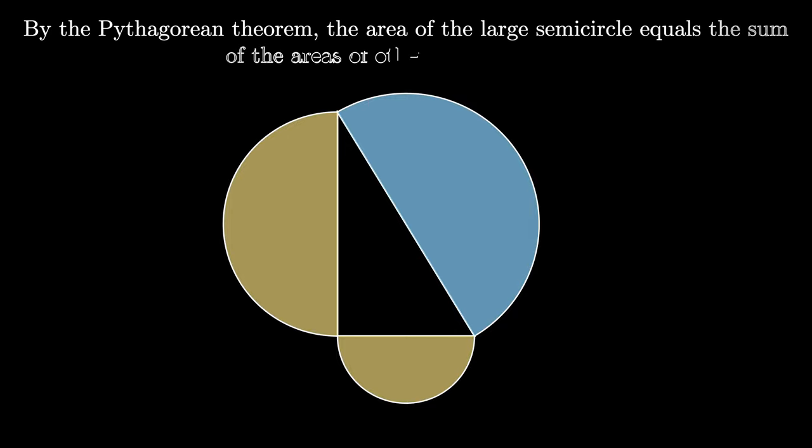According to the Pythagorean Theorem, the area of the large semicircle on the hypotenuse equals the sum of the areas of the other two semicircles. So in this picture, the blue area counteracts the yellow area.